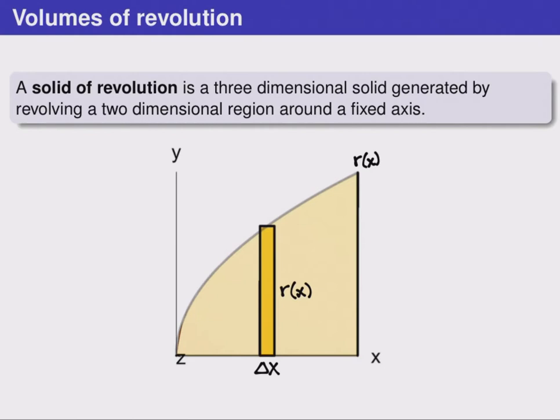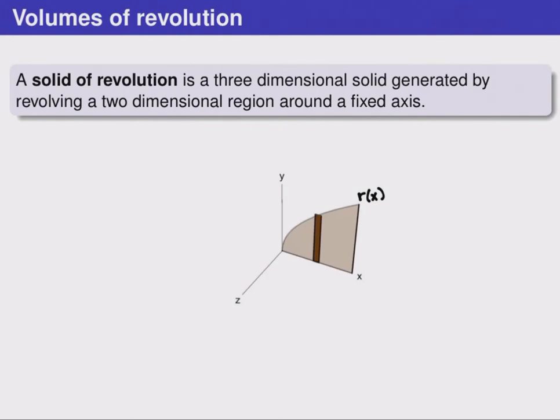Along the way, we're going to follow the path of a thin box with width delta x. The height of this box is r of x given by the function that we were initially given. If we think of that two-dimensional region as sitting inside three-dimensional space, we can follow it as we revolve this region.